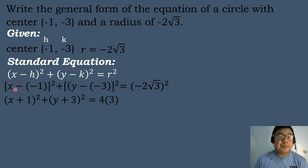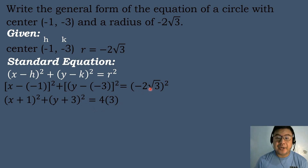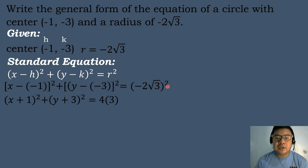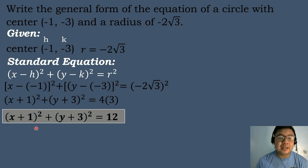We will simplify. Bring down x — negative times negative 1 equals positive 1 — raised to the second power, plus the quantity of y — negative times negative 3 equals positive 3 — raised to the second power, equals negative 2 square root of 3 raised to the second power. That gives negative 2 times negative 2 equals positive 4, and square root of 3 to the second power — the square root and the square cancel — equals 3. We then multiply 4 times 3, so the answer equals 12. Therefore, the standard equation is the quantity x plus 1 to the second power plus the quantity y plus 3 to the second power equals 12.